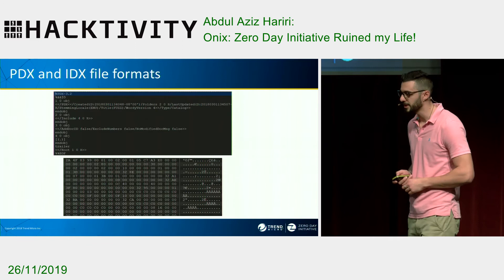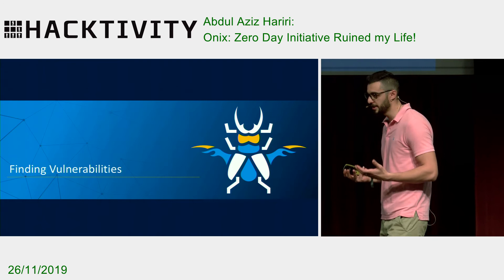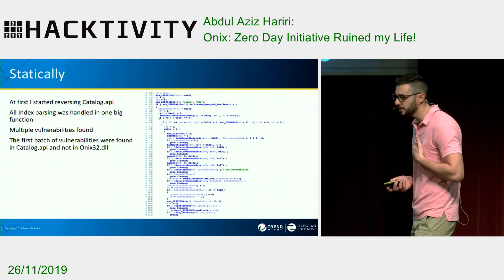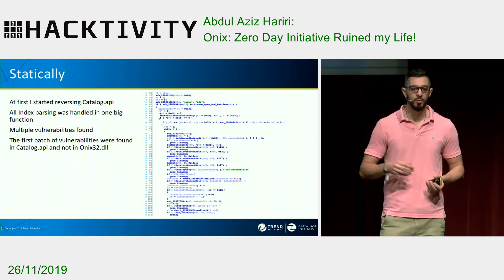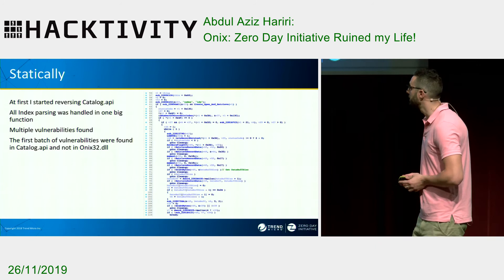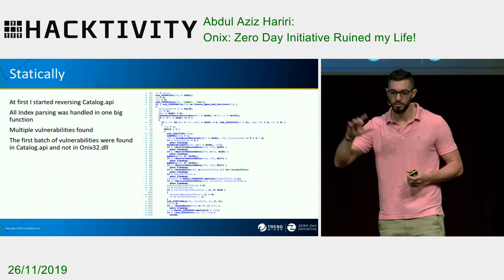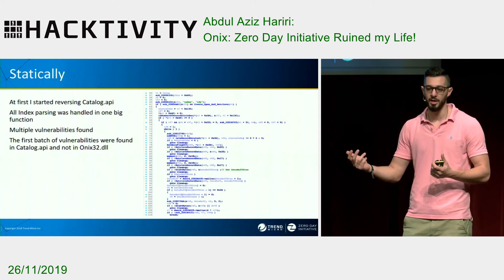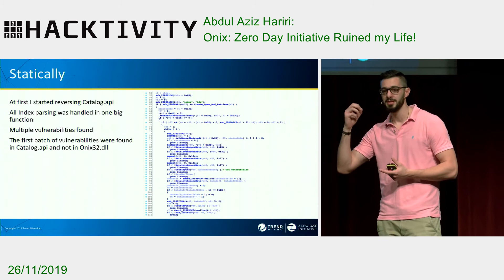Now that I had all the information I needed, it was time to start finding vulnerabilities. Two ways: statically and through fuzzing. The first way I approached it was statically. I went to catalog.api, reversed it, and tried to understand how it was interfacing and calling the Onyx APIs. In the end I found that all the index parsing happens inside one giant function. There are two types of vulnerabilities: one in Catalog in how it handles Onyx APIs, and another in core Onyx API vulnerabilities. I was successful in finding both.